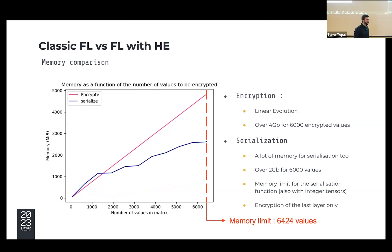The library has its own serialization function, but this function has a limit. I found it's not possible to serialize more than 6,424 values; exceeding this number produces an error. So it's not possible to encrypt the entire model, and we therefore focus on the last layer. All results are presented in the next slide — we encrypt just the last layer.